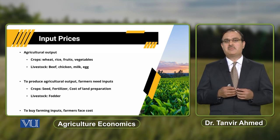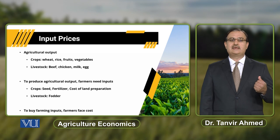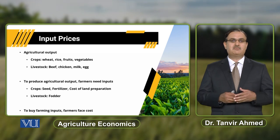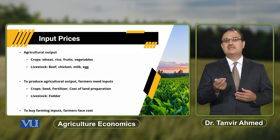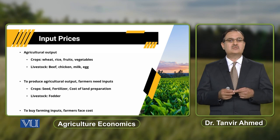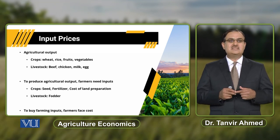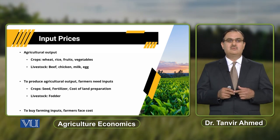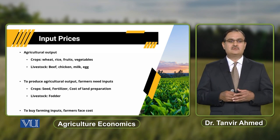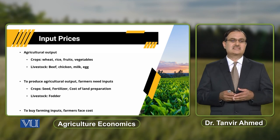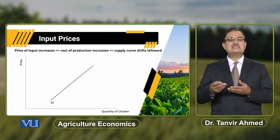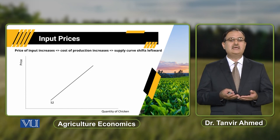Phir agar main isi pattern pe livestock ke reference mein baat karun, to wahan pe mere paas beef ho sakta hai, chicken ho sakta hai, milk ho sakta hai aur ande bhi aa sakte hain. Ab in sab ko produce karne ke liye kya chahiye hoga? The major input used in the livestock sector is fodder. Poultry ki chicken ke case mein it might be poultry feed. Agar mujhe livestock ke reference mein baat karni hai — for the production of milk, then it requires fodder. Ab jab farmer in inputs ko purchase karega, farmer has to face certain cost, aur jab in inputs ki price change hogi, it has some influence on the supply of the commodity under consideration.